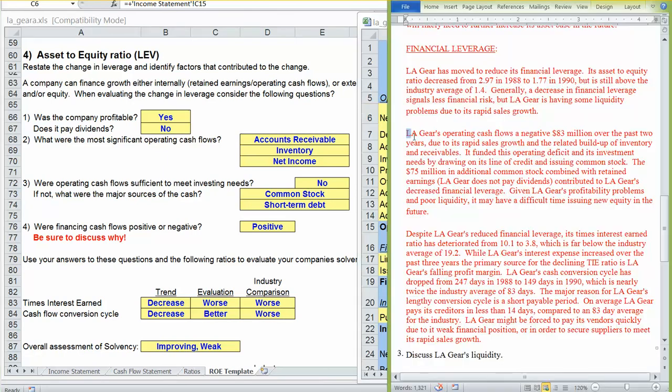So I discussed our operating cash flows and the fact that we had a deficit and then how we funded that deficit. And then you can read through this section here in terms of assessing our times interest earned ratio and our cash conversion cycle. And overall, we're not doing so great in the area of solvency.